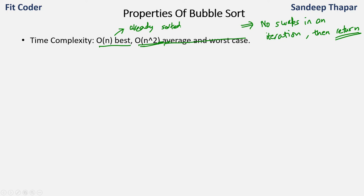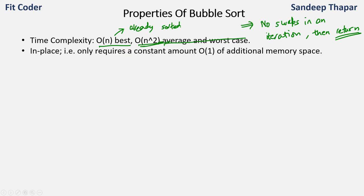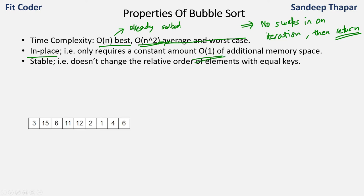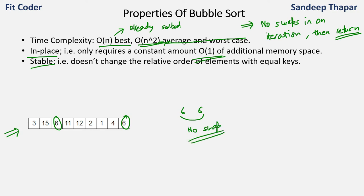That is how we handle the best case in bubble sort — otherwise if the array is already sorted and we keep running, we end up with O(n²). This is an in-place algorithm, meaning it does not require any extra space, so the space complexity is O(1). Bubble sort is also a stable algorithm — it doesn't change the relative order of elements with equal keys. When we reach two adjacent elements with equal values, we do not swap them, so the relative order of equal-key elements is maintained, making this a stable algorithm.